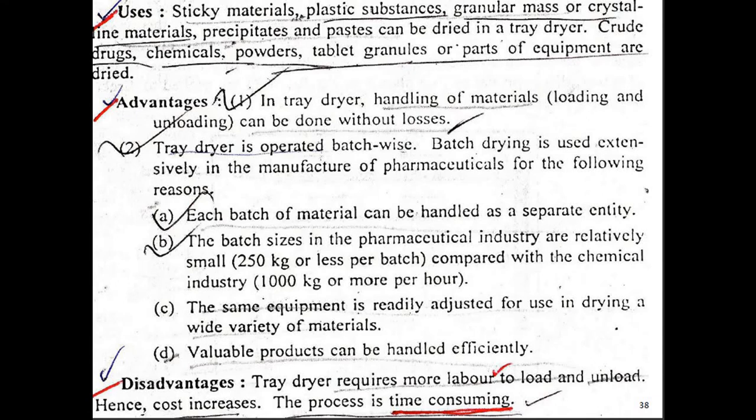The tray dryer can be used for drying sticky materials, plastic substances, granular mass, crystalline materials, precipitates, drug chemical powders, etc. Advantages: material can be handled without losses; batch-wise drying is possible; each batch can be handled separately; it is well-suited to the relatively small batch sizes in pharmaceutical industry; and it can be used for a wide variety of materials. Disadvantage: it is time-consuming due to the labor required to load and unload material every time.